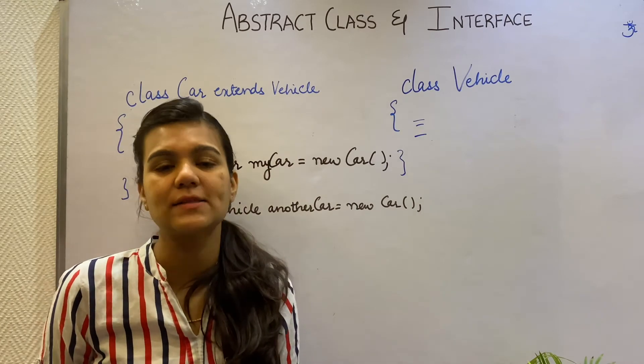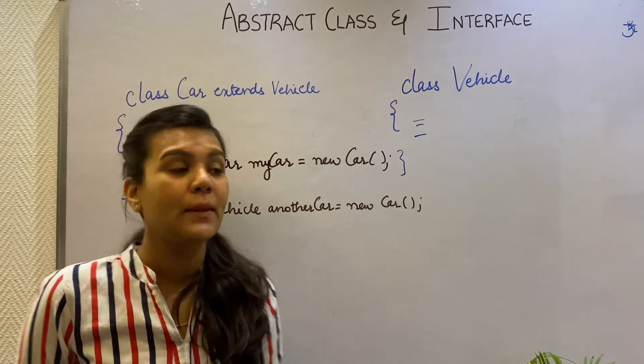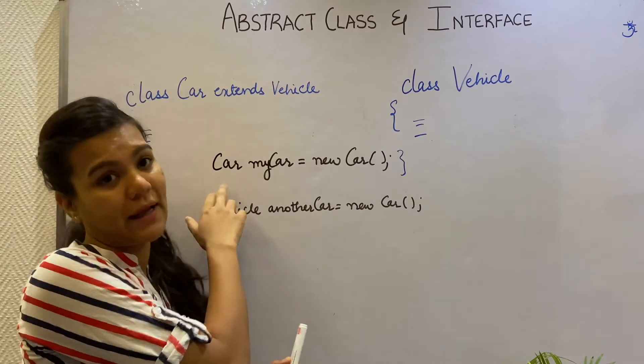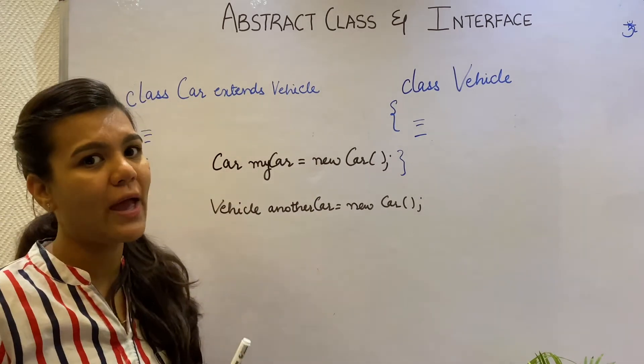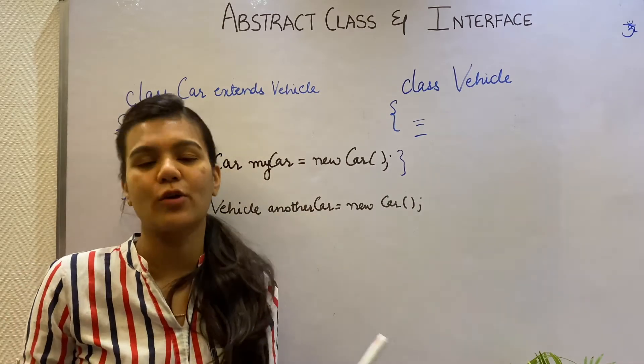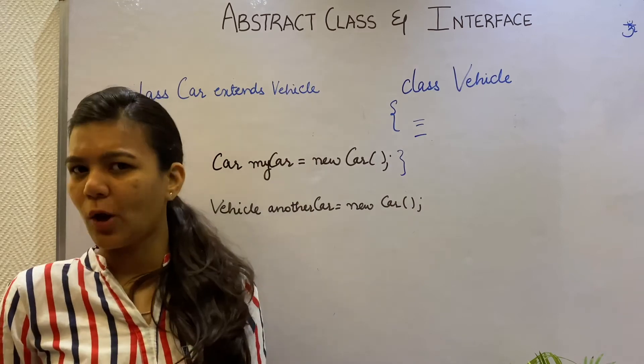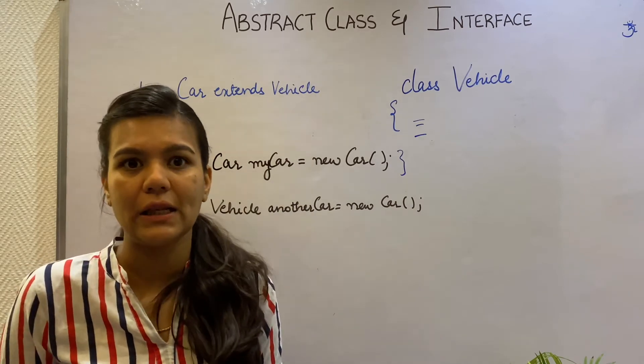I could have other classes such as a Scooter or a Truck extending my Vehicle class. I can create an object of my Car class or I can also have a Vehicle class reference that can hold a Car or a Scooter object. But have you thought how a Vehicle object might look like? Well, I don't know.